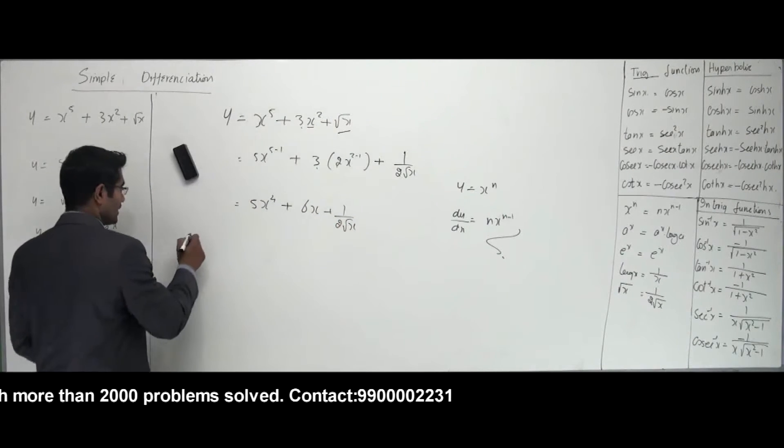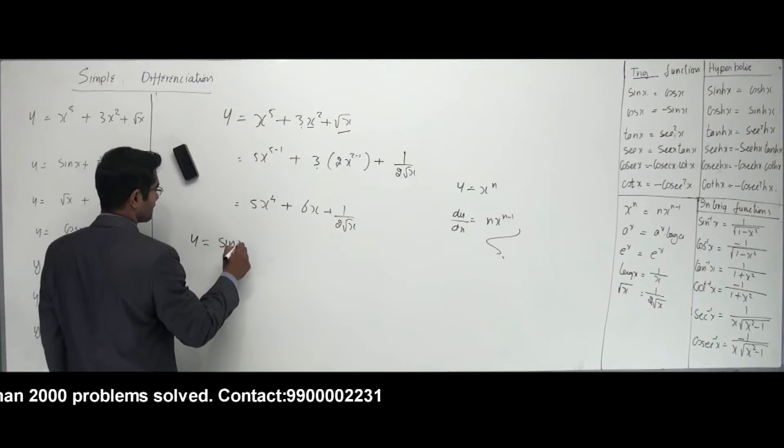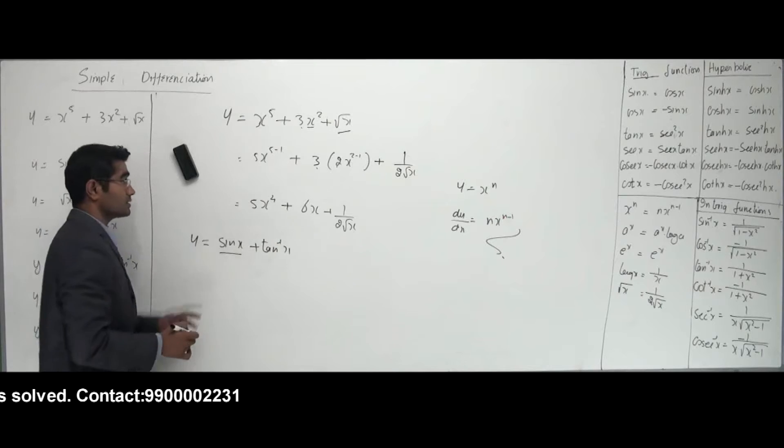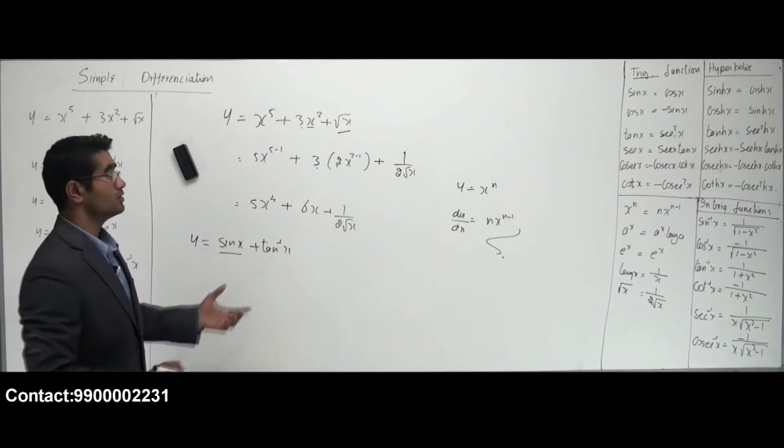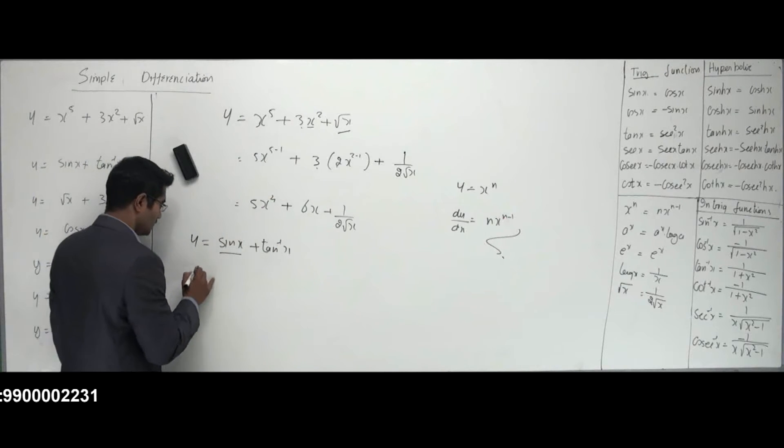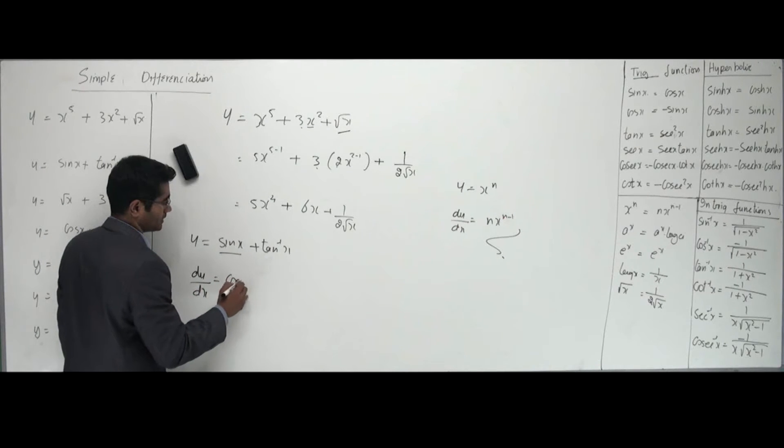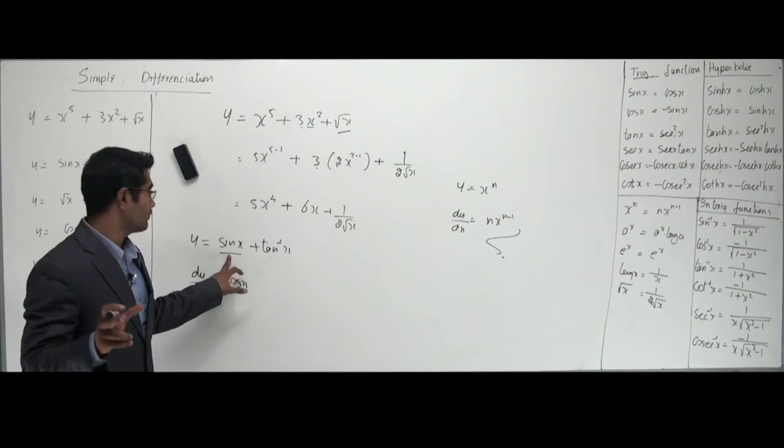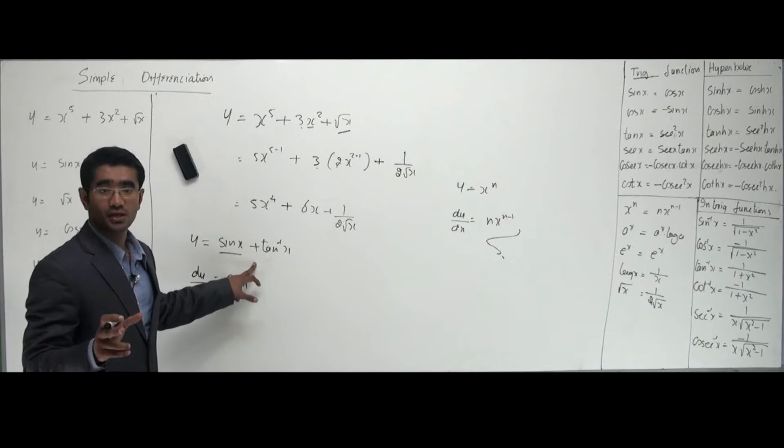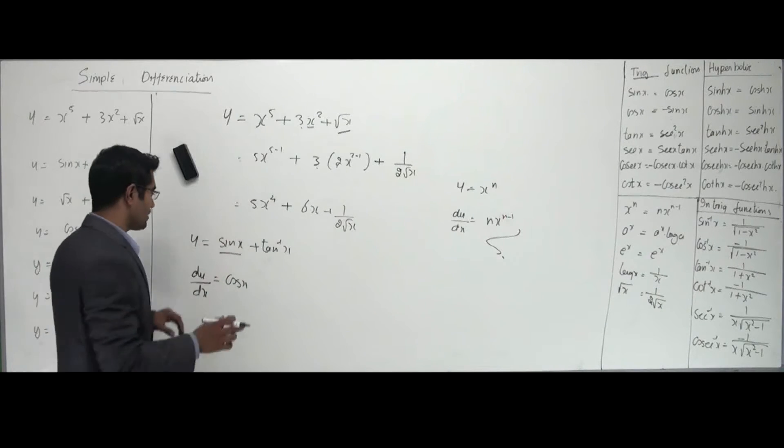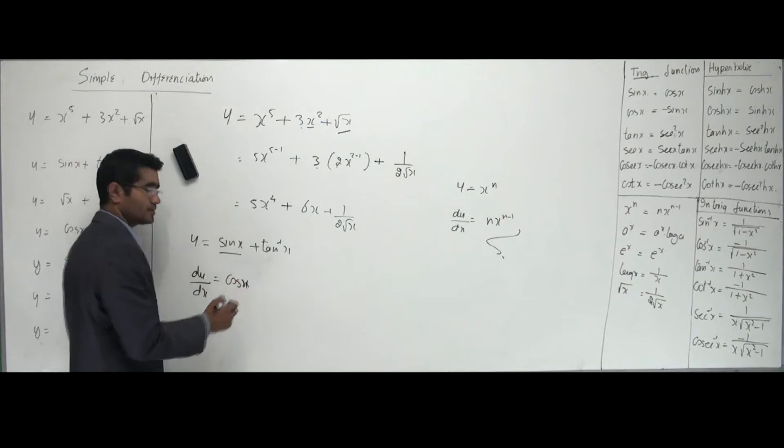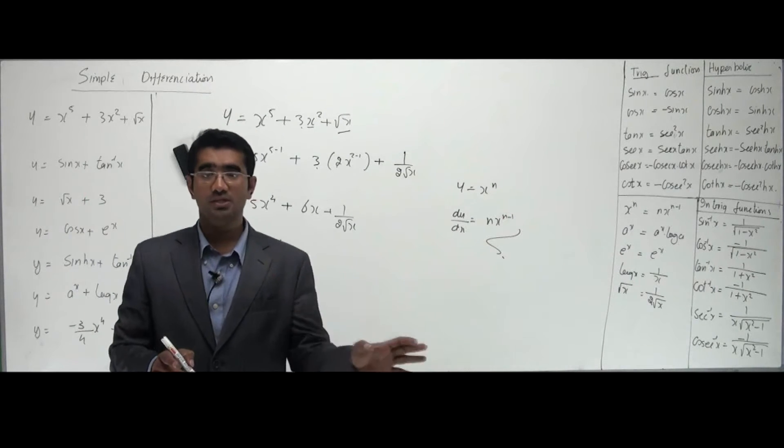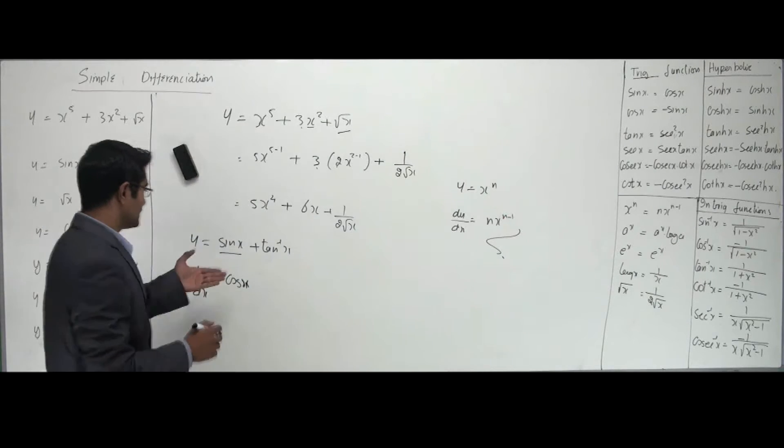The next one: y equals sin x plus tan inverse of x. Do I have an answer for sin x? Yes, derivative of sin x is cos x. So dy/dx would be cos x. See, these are single functions; they're not together. Togetherness is when you have a multiplication sign or a division sign. These are single, so I can differentiate individually. Remember the rule: you have a single function, you can differentiate it.